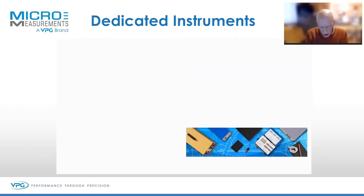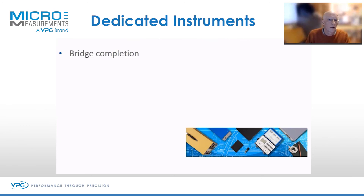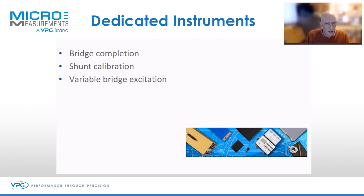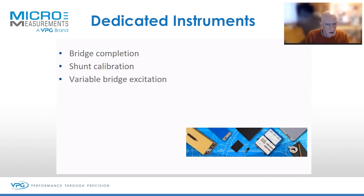A lot of what we talk about is using dedicated instruments. Although you can go to first principles and build something yourself, dedicated instruments do all of this for you — they generally include bridge completion, shunt calibration circuits with the mathematics, and variable bridge excitation. A small gauge on a plastic or composite substrate heats up much more than a large gauge on aluminium, so you may need variable excitation in your instrumentation.